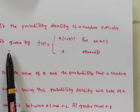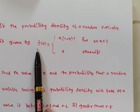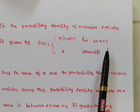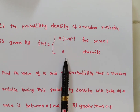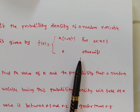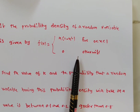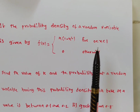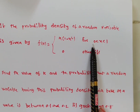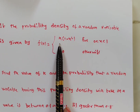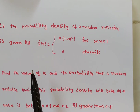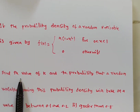Next problem: if the probability density of a random variable is given by f(x) equal to k times (1 minus x squared) for 0 less than x less than 1, and 0 otherwise. The function is defined over all real numbers from minus infinity to infinity, but the non-zero part is only between 0 and 1.